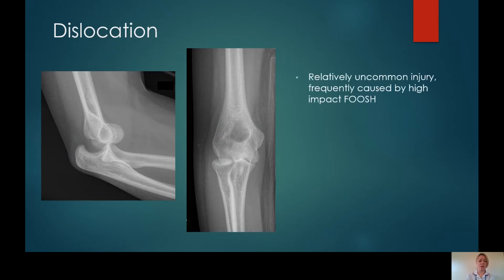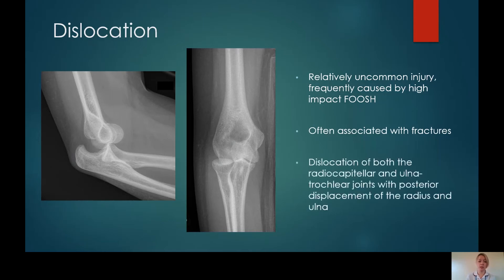Dislocations are another kind of injury that you may see coming through A&E. They are less common than a fracture, although they also frequently occur alongside a fracture, where there has been a bony impact when the joint has become disrupted. Frequently caused by high-impact FOOSH injuries, and there will probably be a joint effusion present, although they can be quite obvious. If you use your radial capitella line, you will see that the radial head does not transect through the capitellum. This is an example of a dislocation of both the radiocapitellar and ulnotrochlear joints, with the forearm displaced to the proximal radius and ulna.